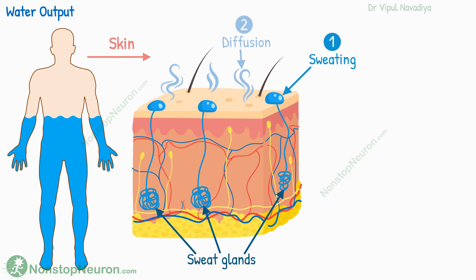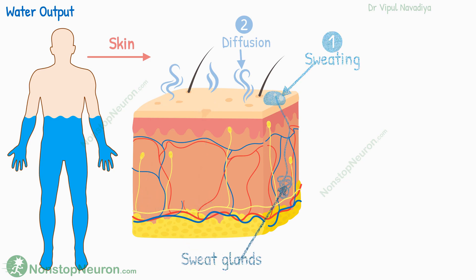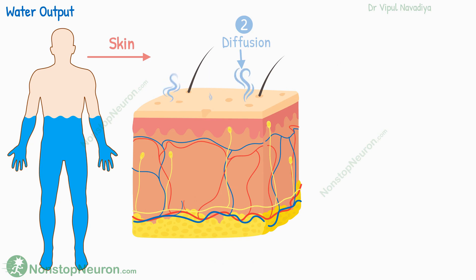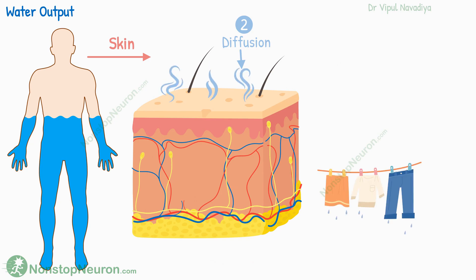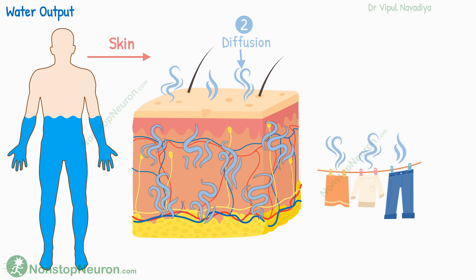The second way water is lost from the skin is by diffusion — more like passive evaporation from all over the skin rather than active sweating by sweat glands only. Even people who don't have sweat glands lose water this way. When you keep wet clothes in open air, they get dry by evaporation.